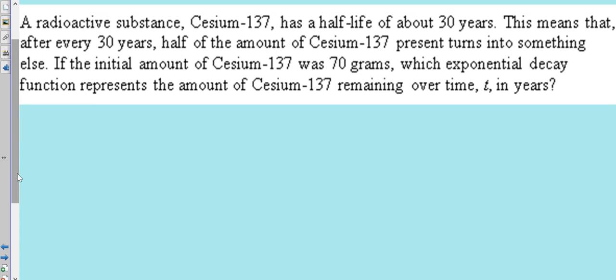The substance Cesium-137 has a half-life of about 30 years. This means that every 30 years, the amount of Cesium-137 present turns into something else. The initial amount of Cesium-137 was 70 grams. Which exponential decay function represents the amount of Cesium-137 remaining over time T in years?